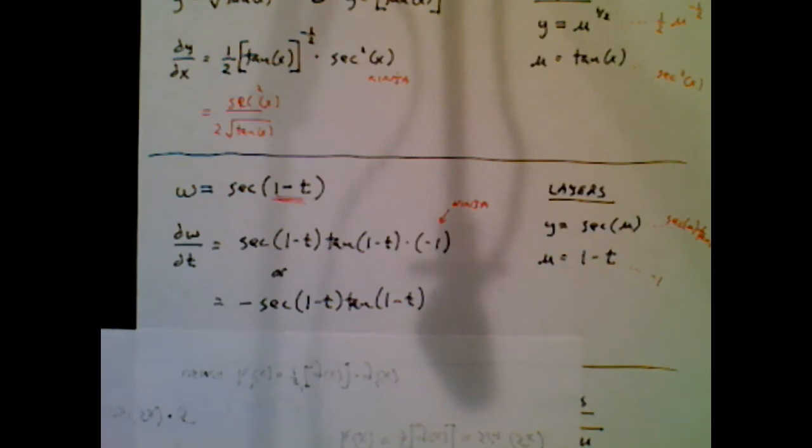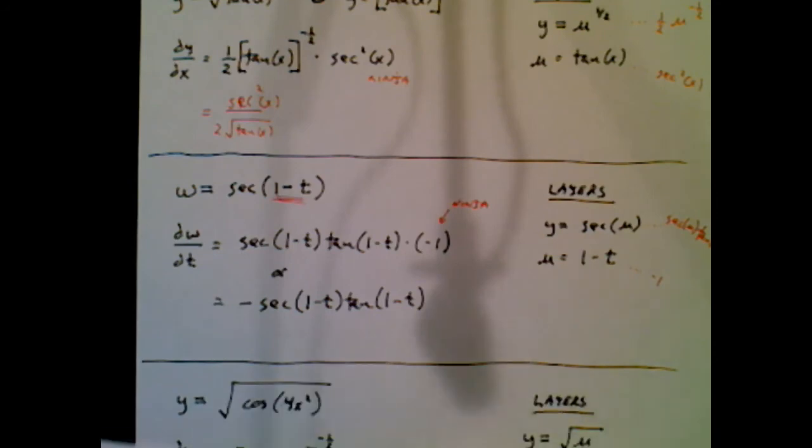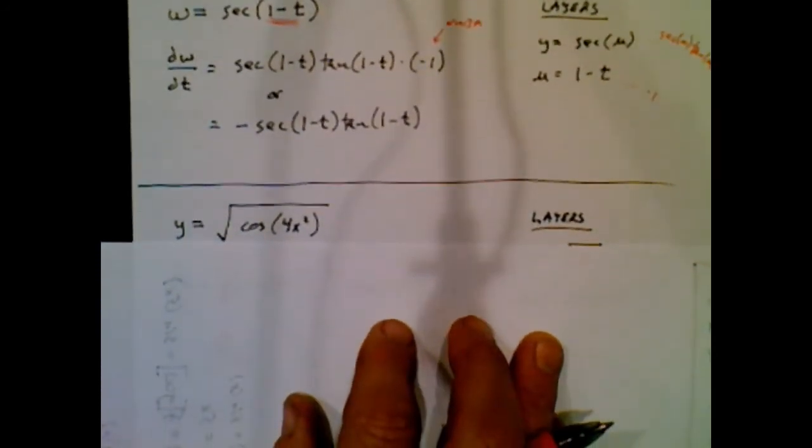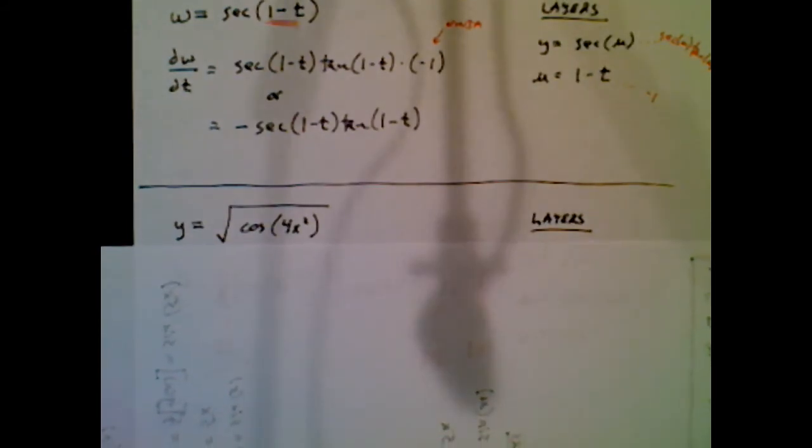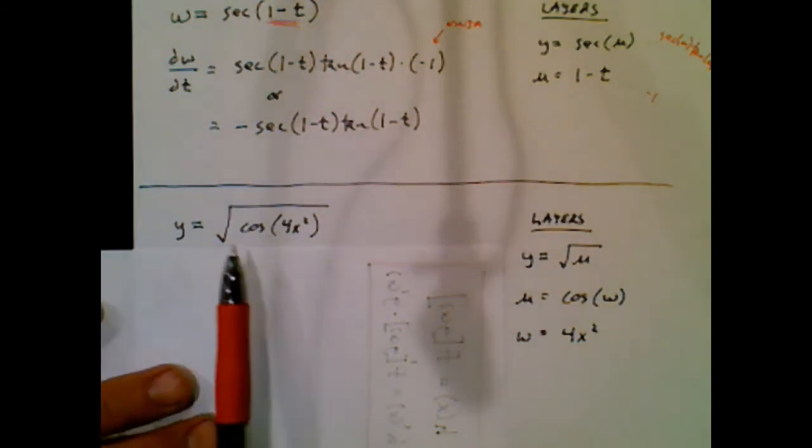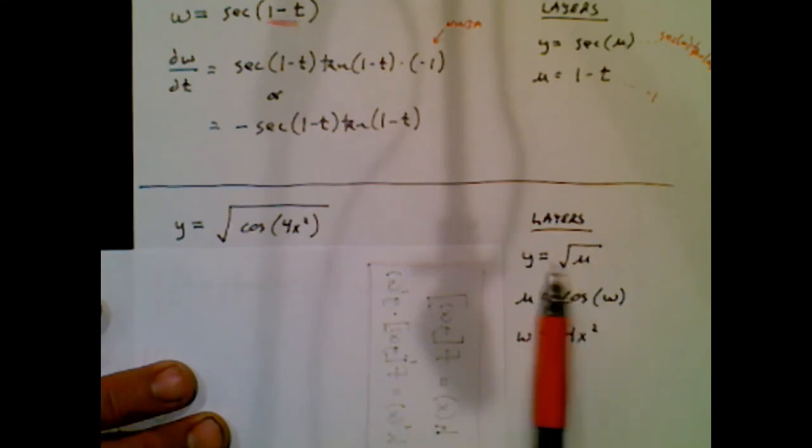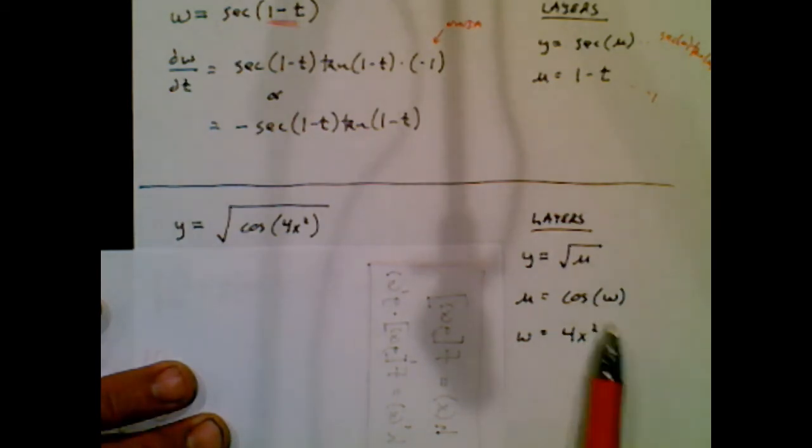All right, now let's do one final problem. And there's a new wrinkle here. It's cosine of 4x squared. Wait a second. There's something weird happening here. Cosine is living inside of a square root function. But 4x squared is living inside a cosine function. We've got three layers. Holy moly. This is why you need to think of this as layers. I write out my layers. So it looks like that. It's a square root style function. That's the outermost layer. Cosine is living inside the square root function. And 4x squared is living inside the cosine function.